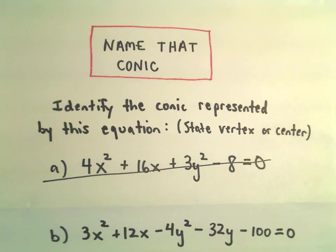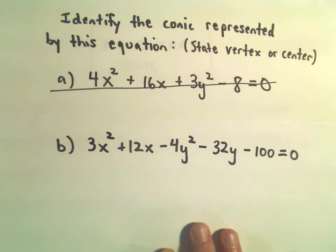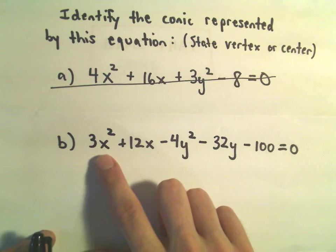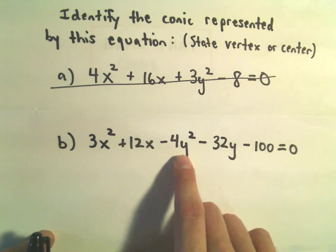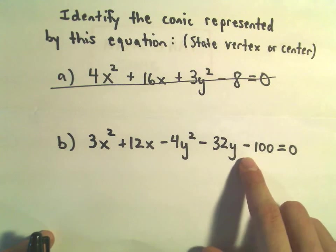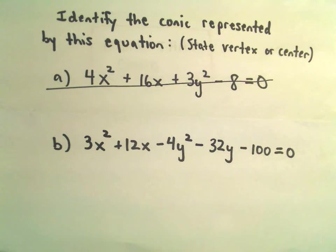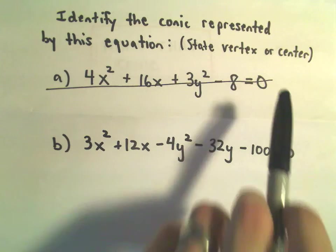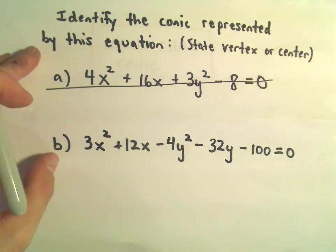Alright, so another example here of identifying a type of conic section. And here we're going to do 3x squared plus 12x minus 4y squared minus 32y minus 100 equals 0. And depending on what type of conic section it is, we're either going to state the vertex or the center.